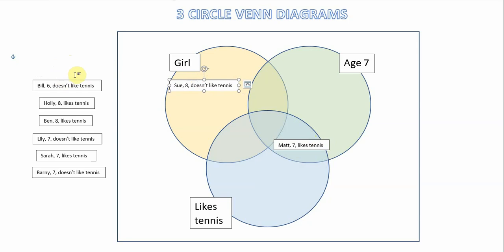Our third child is Bill, a boy who's six years old and he doesn't like tennis. Now you'll notice that Bill doesn't actually belong in any of these three sets. He's not a girl, he's not seven, and he doesn't like tennis. So he sits in the universal set outside of all the three other sets.